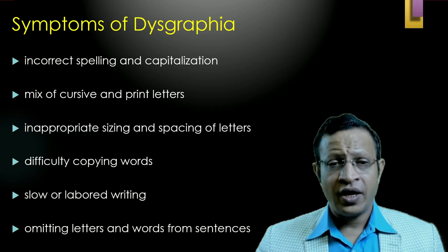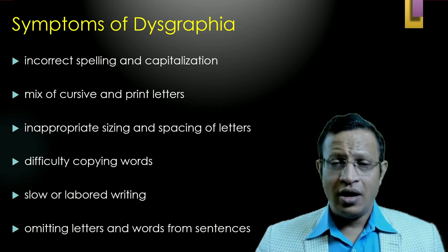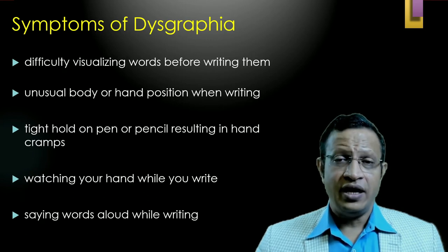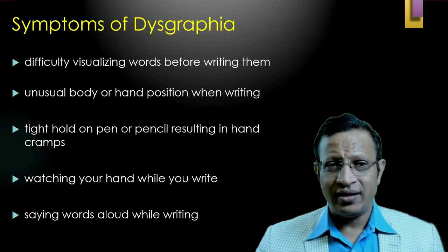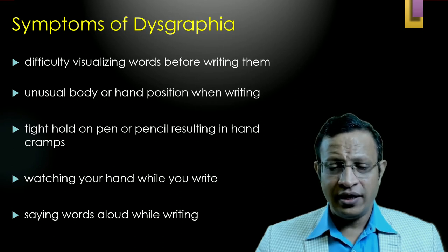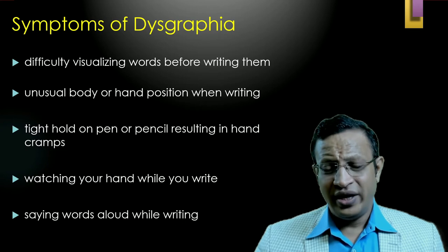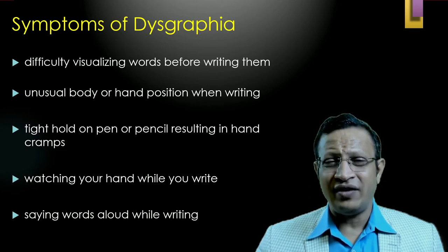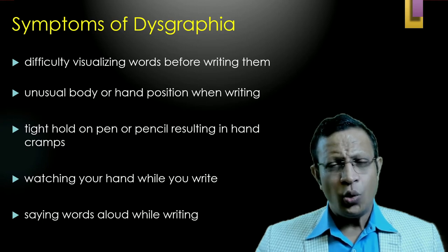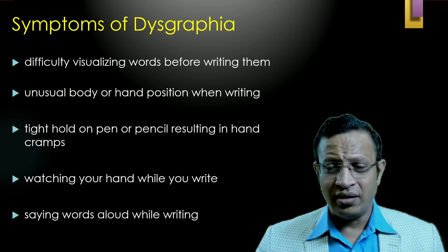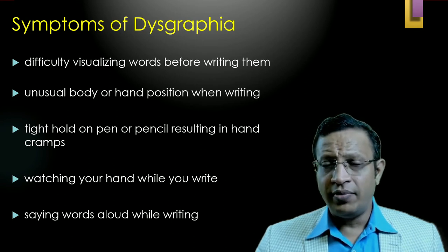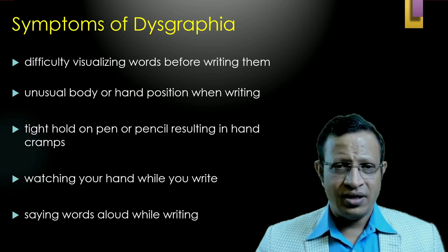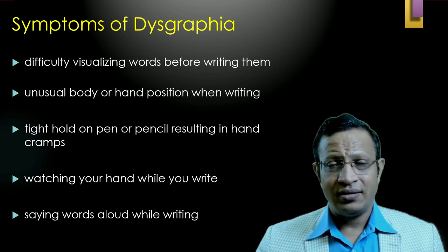Further signs include slow or laboured writing, omitting letters, adding letters, difficulty forming sentences, difficulty visualizing words before writing them, and unusual body or hand position when writing. They grip the pen very tightly and often report pain in the hand after writing for 10 to 15 minutes. They will be watching their own hand while they write and are unable to look elsewhere. Saying words aloud while writing is another symptom of dysgraphia.